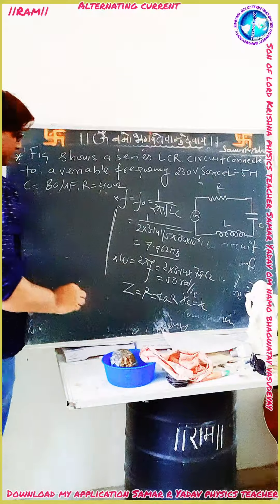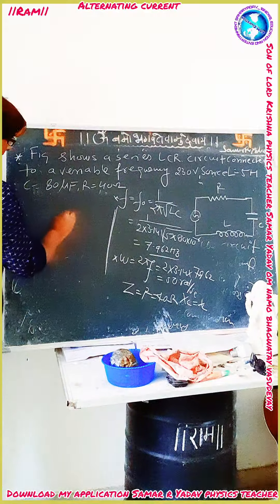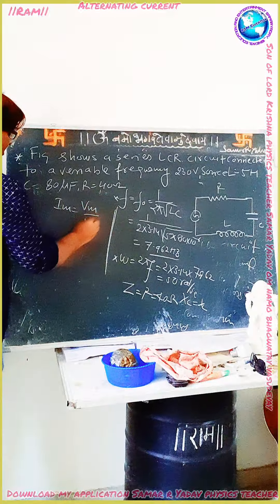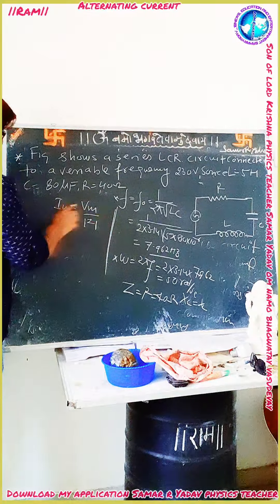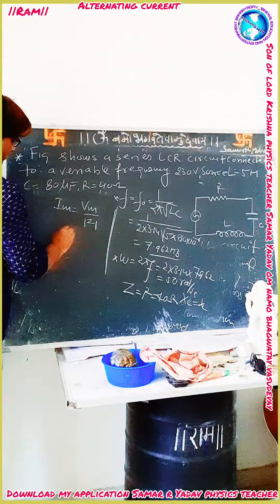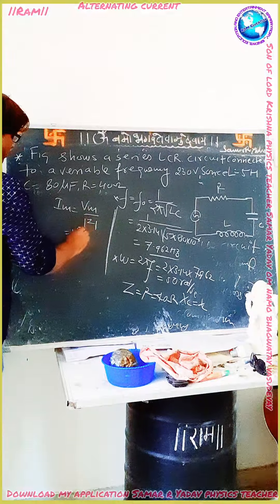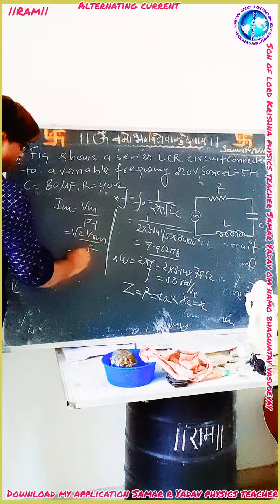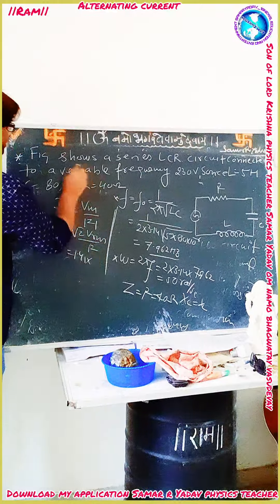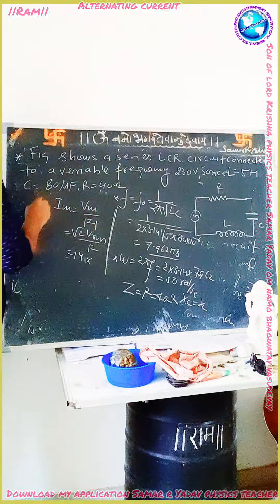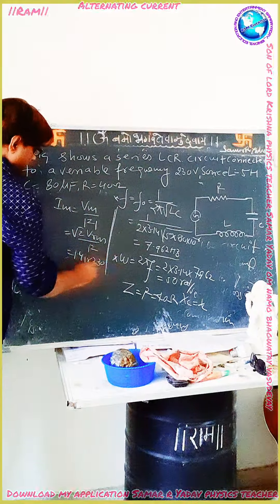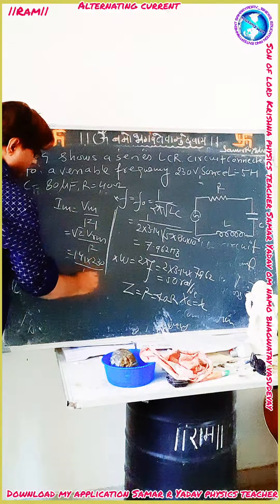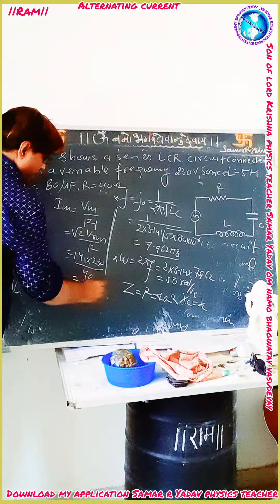Now we find Im. Im is equal to Vm upon Z. Im is equal to Vm upon Z, which equals root 2 × Vrms upon R. Substituting the values, you will get Im equal to 8.13 ampere.